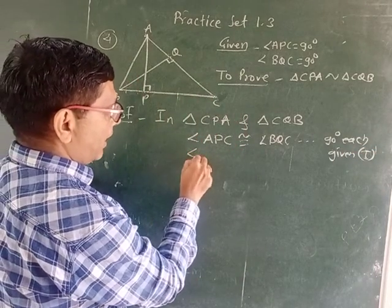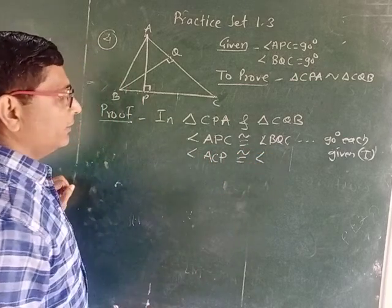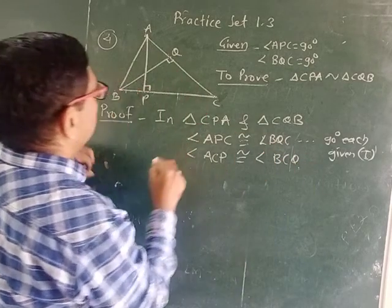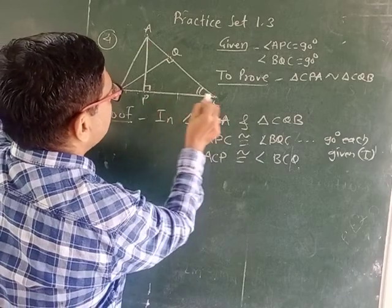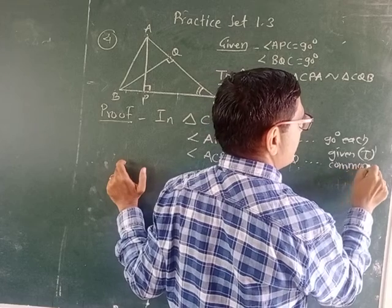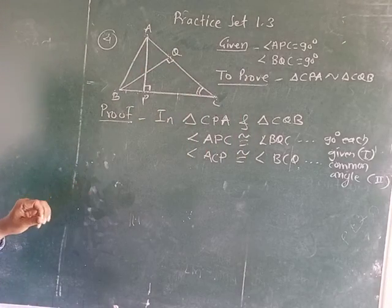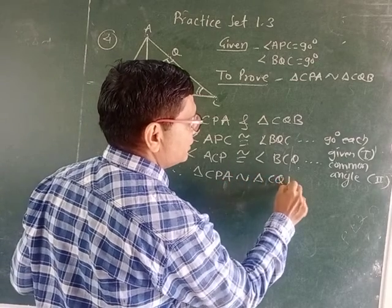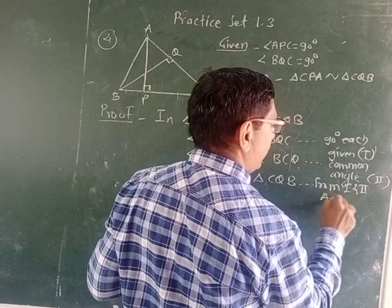Angle ACP is congruent to angle BCQ — look at angle ACP and angle BCQ — this is the common angle at vertex C, and that is statement 2. Therefore, triangle CPA is similar to triangle CQB from statements 1 and 2 by the AA test.